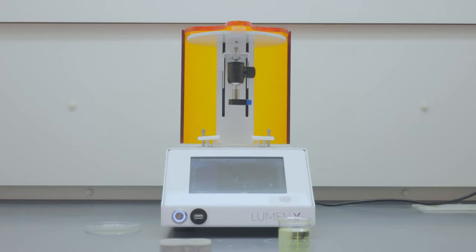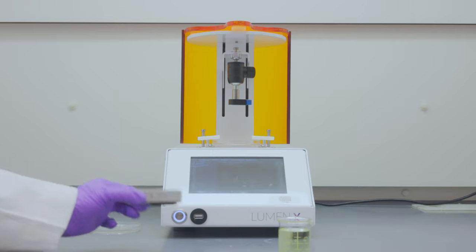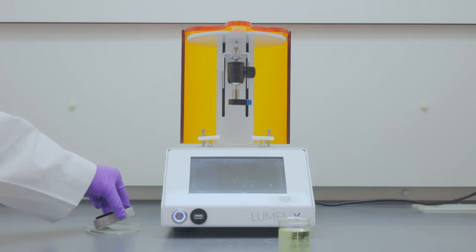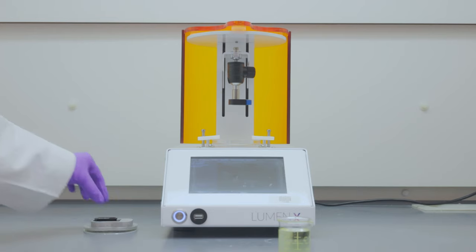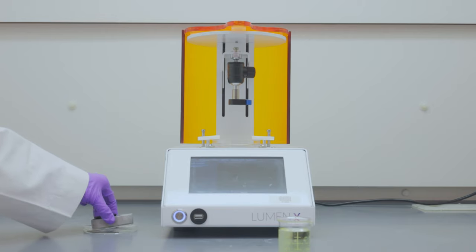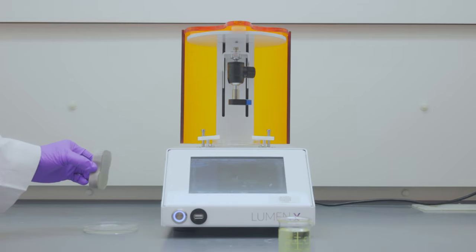After removing the printed object from the build platform, clean the build platform using DI water or 70% ethanol. To sterilize the build platform, soak it in 70% ethanol for 30 minutes and let it air dry. Now dry the surface of the build platform using paper towel.